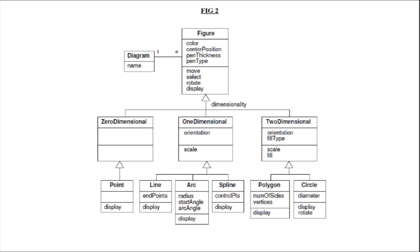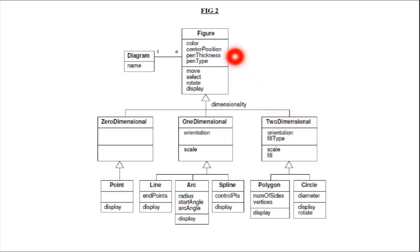Figure is the superclass. The subclasses are zero-dimensional figure, one-dimensional figure, and two-dimensional figure. The color of the figures, center position, and pen thickness — all these attributes can be inherited by the subclasses zero-dimensional, one-dimensional, and two-dimensional. All these subclasses can inherit the features of the superclass figure.